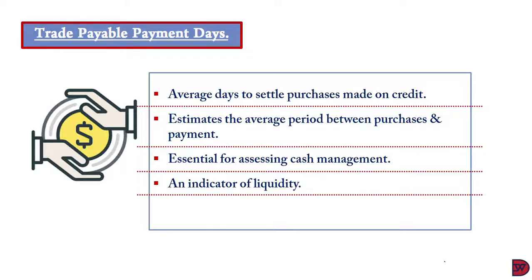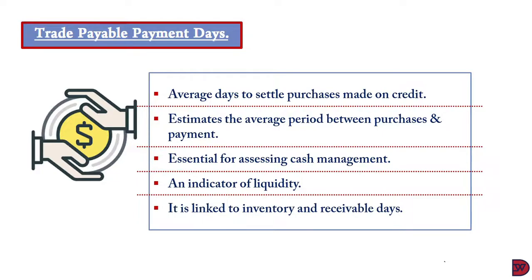The payable payment period is an indicator of liquidity because it is linked to inventory turnover days and the receivable collection period. The core items purchased must be sold, and once sold you are guaranteed money to pay your debt. If receivables don't pay on time, there is less likelihood of having money to settle payables — because current assets must settle current liabilities, and if inventory and receivables cannot be converted to cash, settling payables becomes difficult.